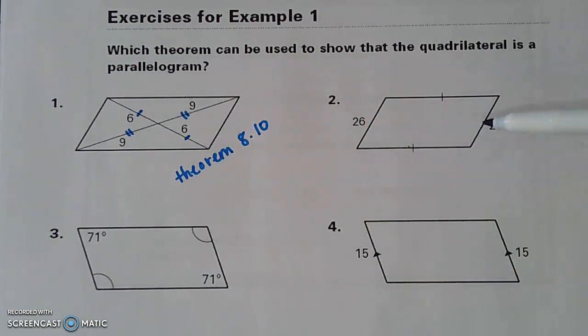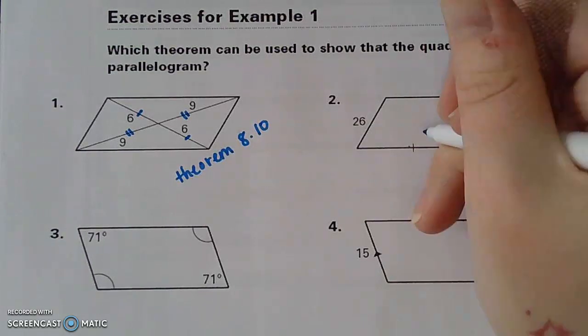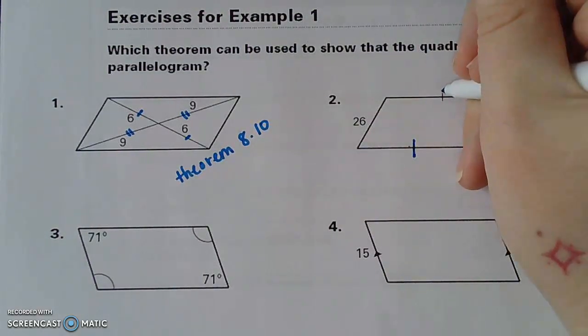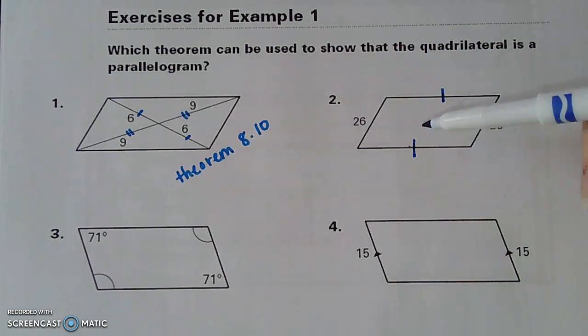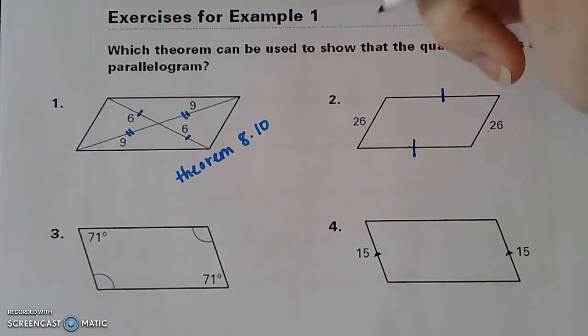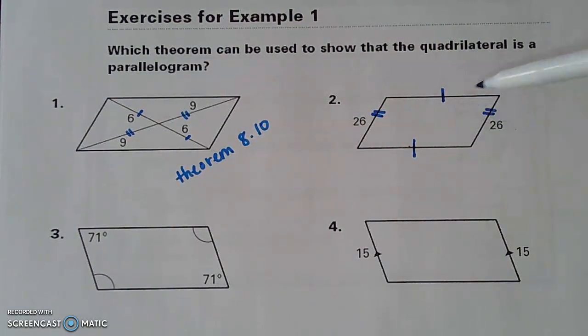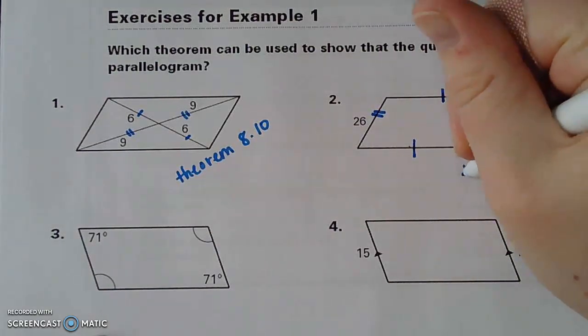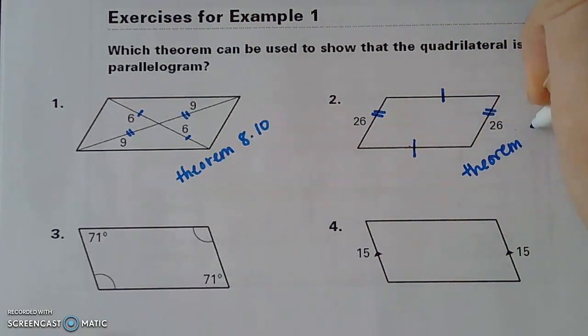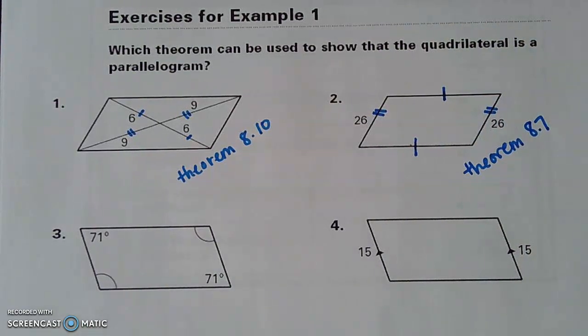I'm looking at question 2 next. I see a tick mark here and a tick mark here, showing me that the opposite sides are congruent. I'm also seeing that the left side is 26 and the right side is 26. So I just added some more tick marks. This is theorem 8.7. And 8.7 tells me that both pairs of the opposite sides are congruent. So this is a parallelogram.